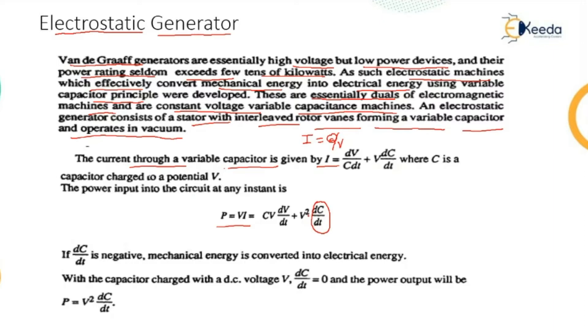With the capacitor charged with DC voltage V, dC/dt equals zero and the power output will be V squared multiplied by dC/dt.